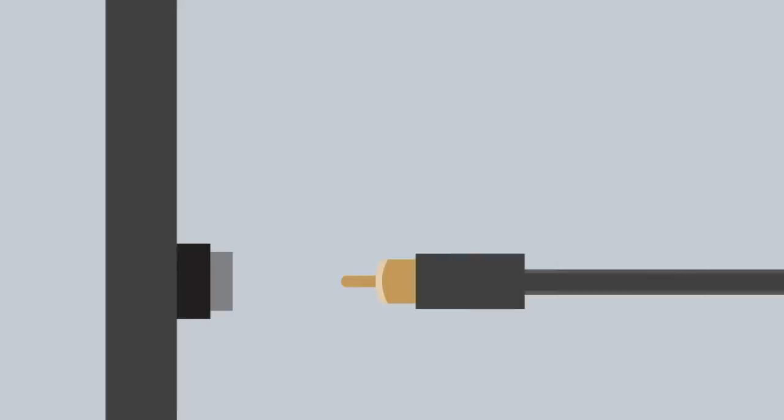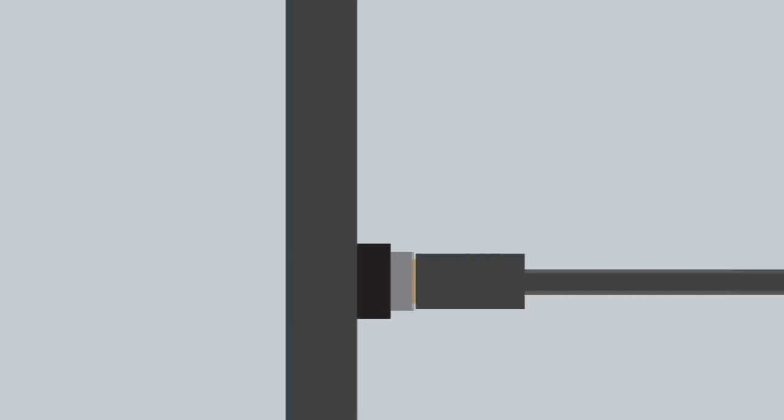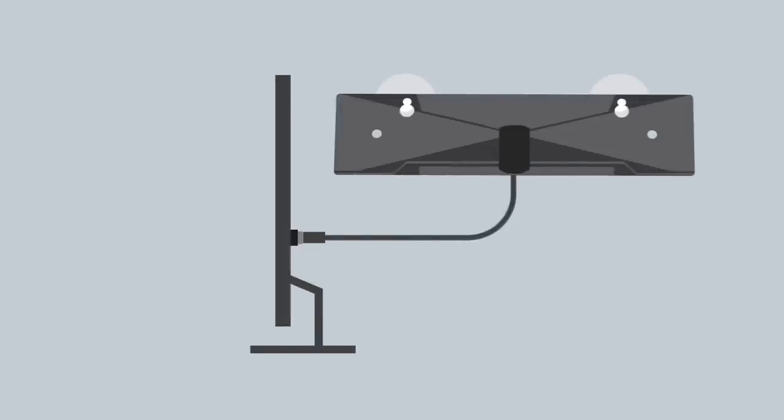First, connect the output coaxial cable of the TW1 to the input terminal of the digital TV set, or digital ATSC converter box.